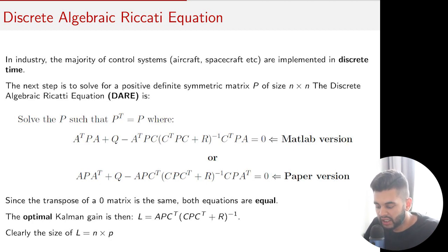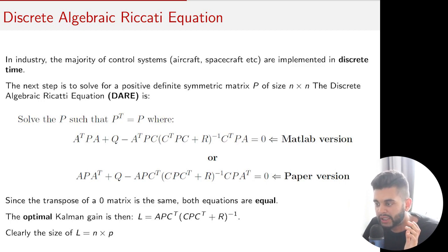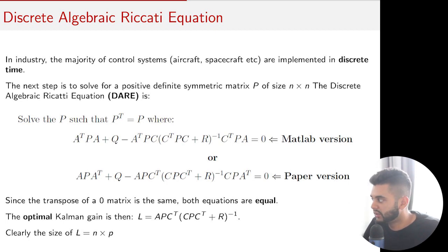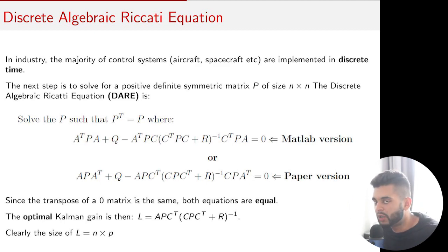The key idea of the Kalman filter is that even if you have five states and only one output, you can still estimate all five states — the Kalman filter lets you estimate every single state in your system irrespective of the number of outputs. So if you have five states and two outputs, L will be 5-by-2, giving you a five-by-one estimated state vector.